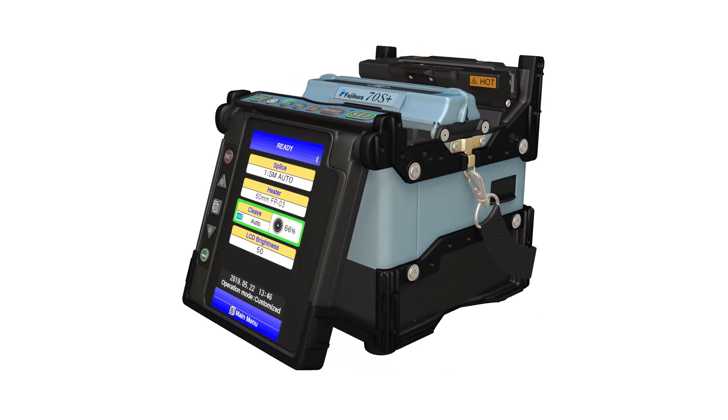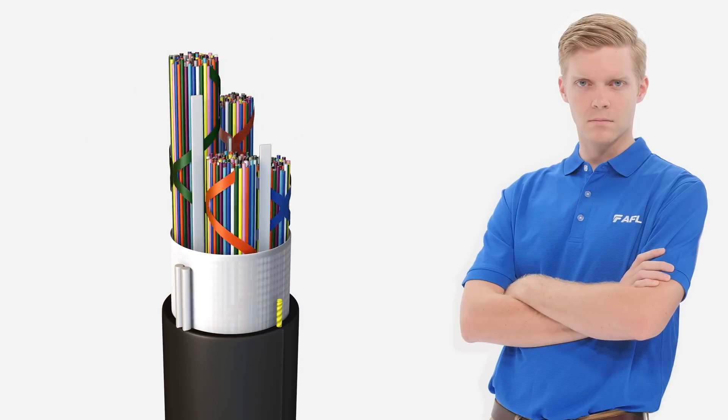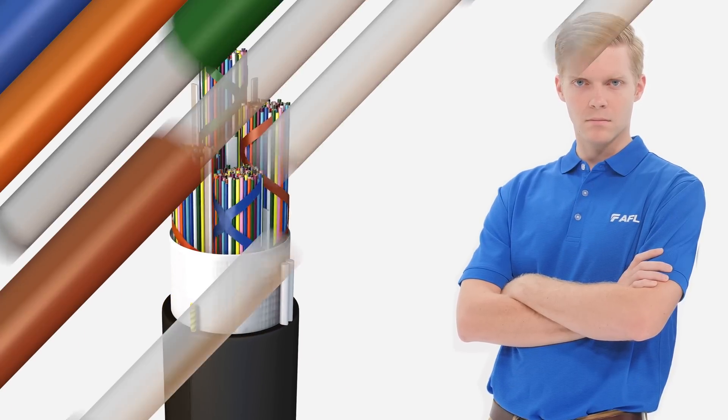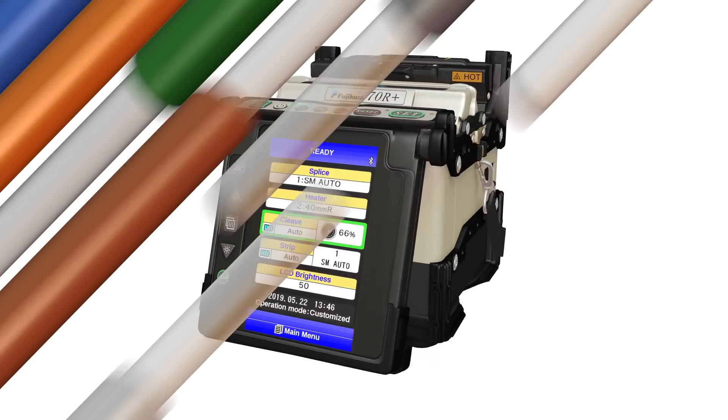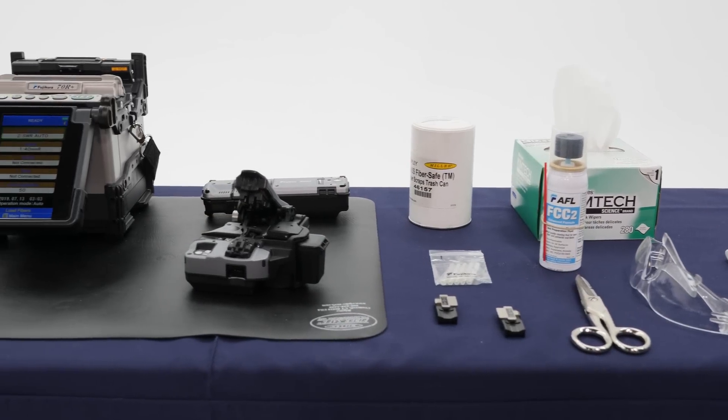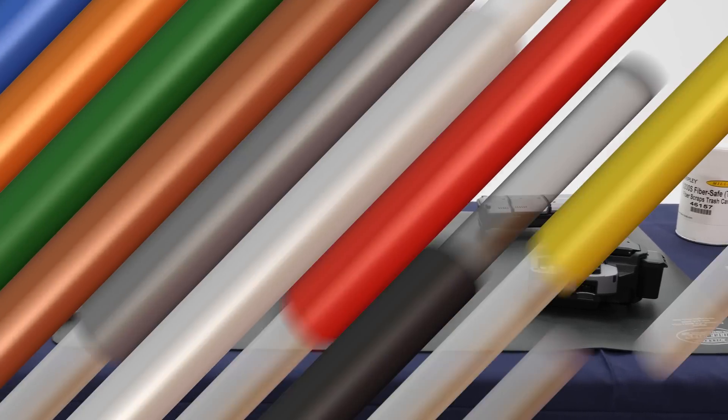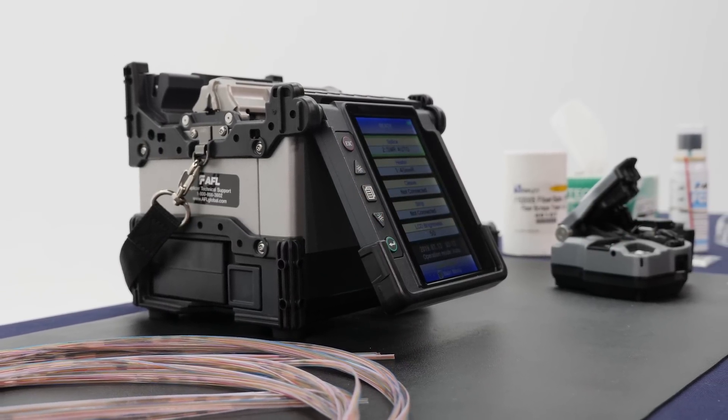And in the other corner, the challenger, Robert McPherson with the spider web ribbon wrapping tube cable and the 70R Plus mass fusion splicer. The rules are simple. Both cables and closures have been laid out and ready for the matchup. The first person to splice all 12 fibers will be our victor.